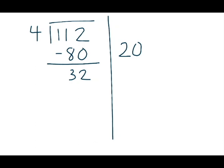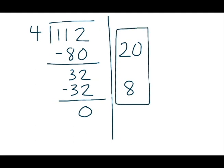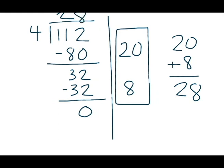I have my division facts memorized — 4 times 8 equals 32, or 32 divided by 4 is 8. So my next partial quotient is 8. I write that on the right-hand side. I multiply 8 times 4, which gives me 32, and write it underneath the other 32. 32 minus 32 is 0, telling me I'm done finding partial quotients. I add them together: 20 plus 8 gives me 28. I write the quotient up top — 112 divided by 4 equals 28.